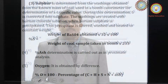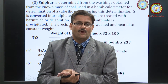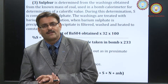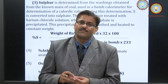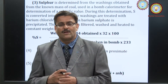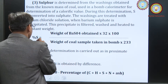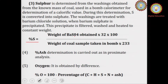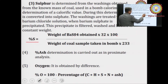Determination of sulfur is carried out by combustion. When the coal sample is burnt, all the sulfur is converted into sulfate. That solution is then treated with barium chloride solution, so that all the sulfate is converted into barium sulfate. Barium sulfate is a white, insoluble substance. It is dried and weighed. Percent sulfur = (weight of BaSO₄ formed × 32 × 100) / (weight of coal sample × 233), where 32 is the atomic mass of sulfur and 233 is the molecular mass of barium sulfate.